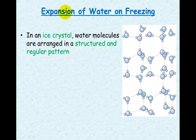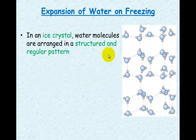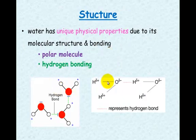This is important when we're looking at the properties, and the first one is the expansion of water upon freezing. In an ice crystal, water molecules are arranged in a structured and regular pattern. Each water molecule can form hydrogen bonds with four other water molecules because you've got the two lone pairs of electrons sitting on the oxygen.